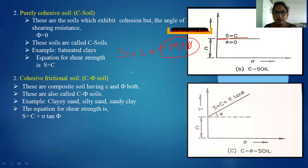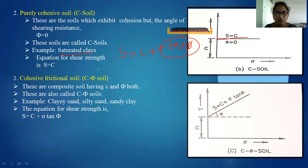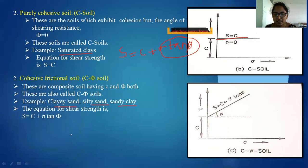An example of a purely cohesive soil is saturated clay — meaning the entire voids are filled by water only. For C-phi soil (cohesion-friction soil), both C and phi values are present. An example is clay soil, silty and sandy soil, where S equals C plus sigma tan φ.